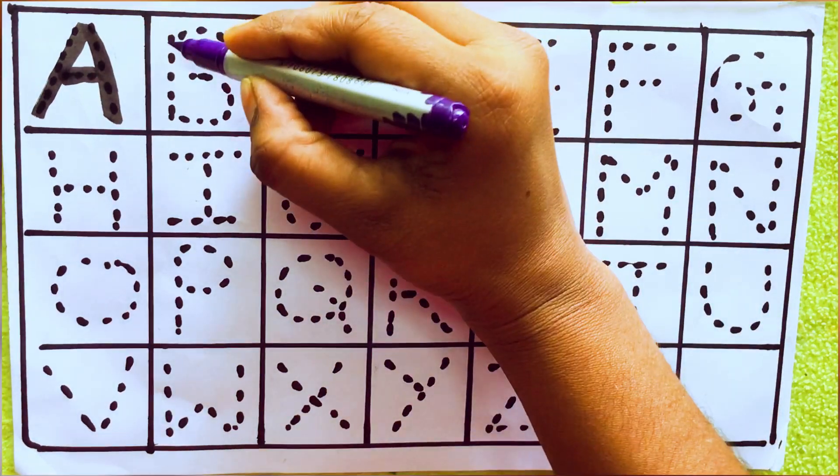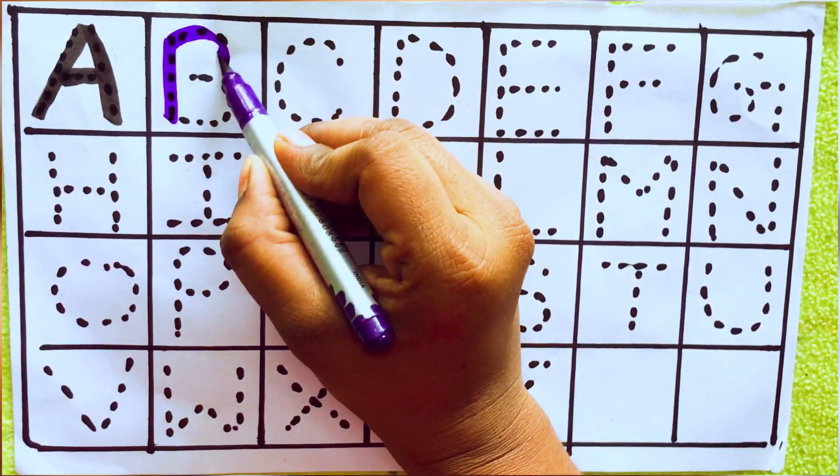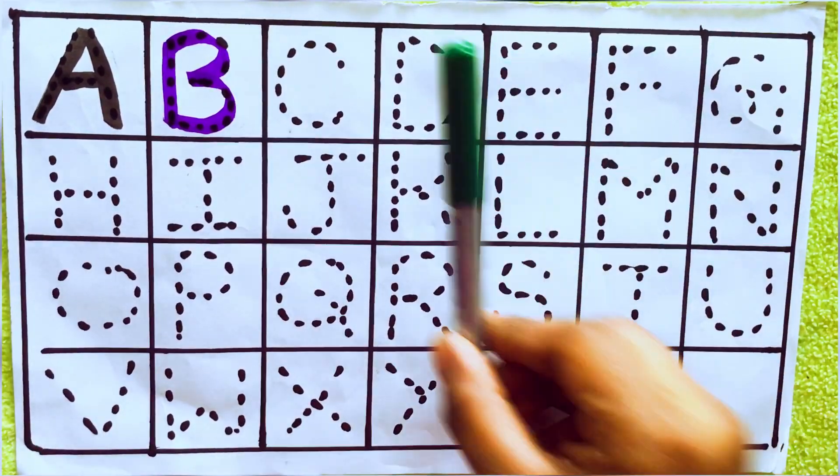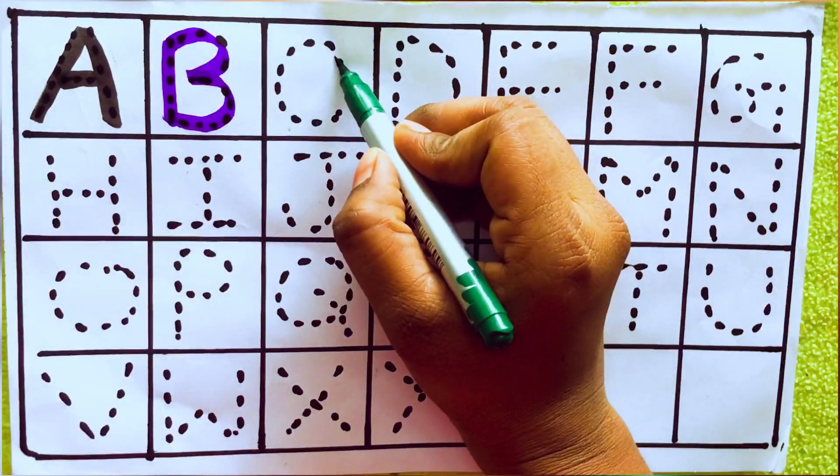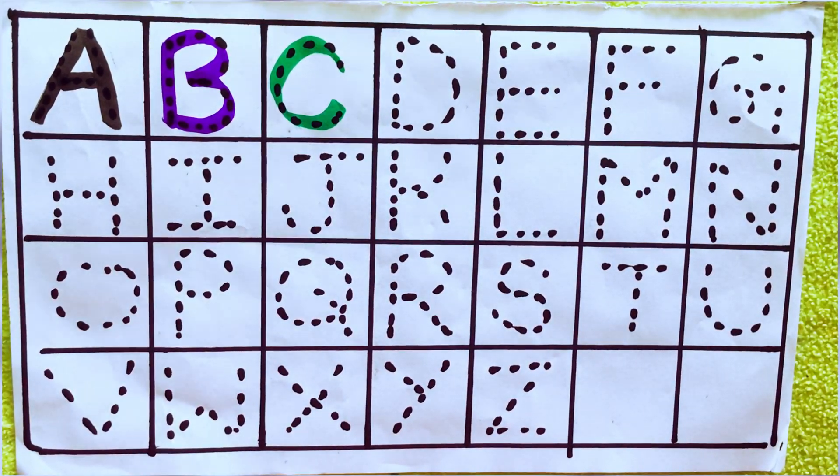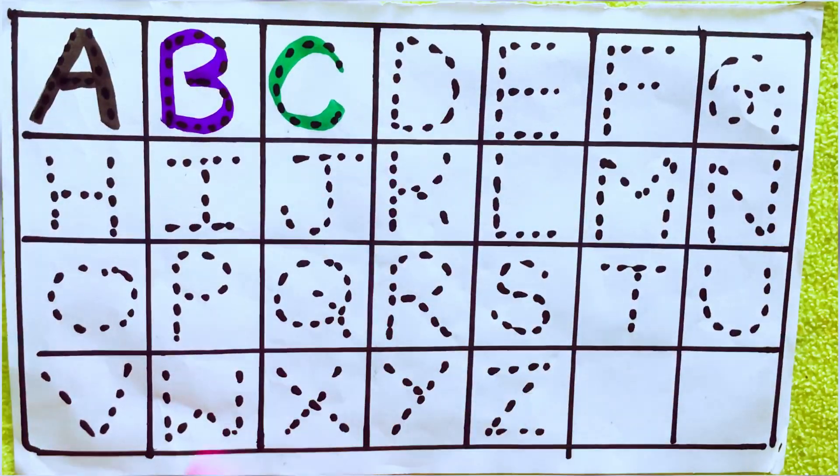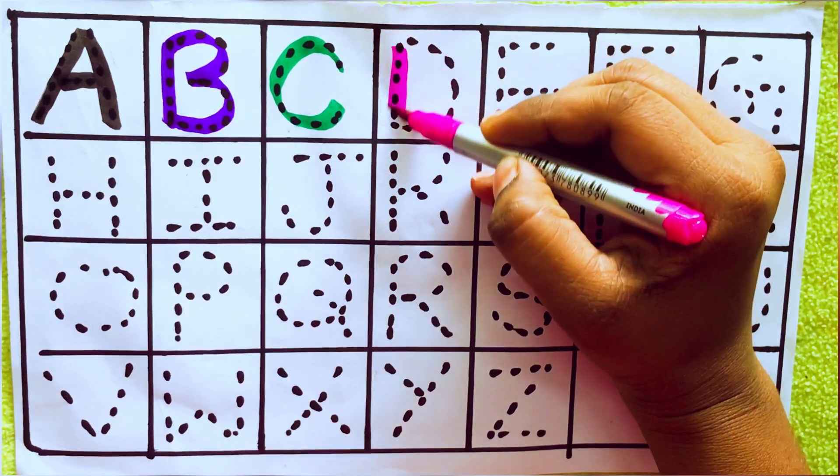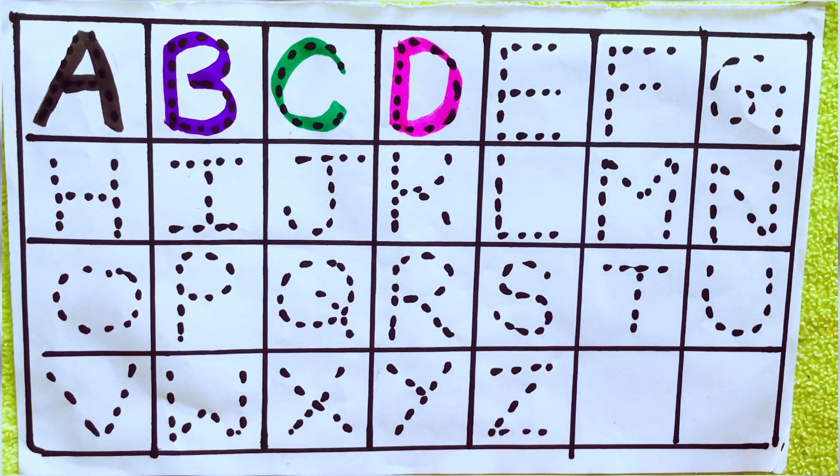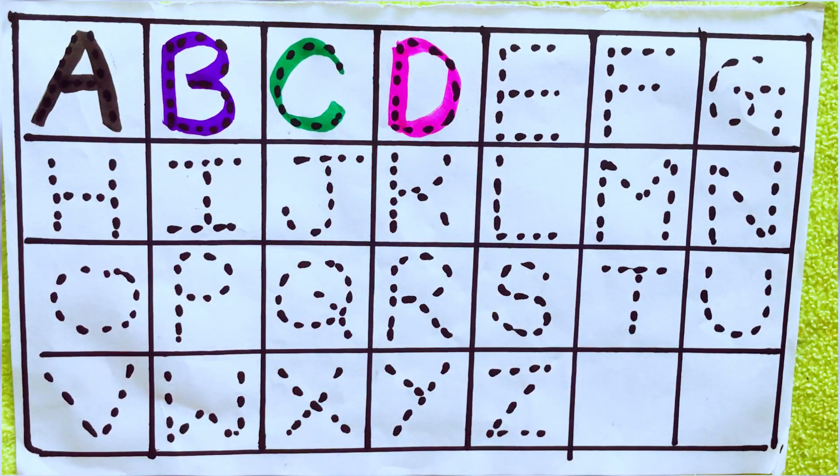Violet color B, B for Ball. Green color C, C for Cat. Pink color D, D for Dog. Red color E, E for Egg.